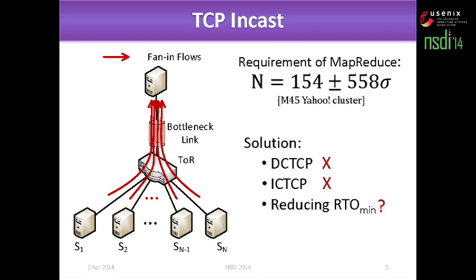Let's look at each problem step by step. The first is TCP in-cast — it's a very famous problem. We think no existing solution can meet all the requirements of MapReduce. For example, the number of senders in MapReduce is quite large, but today's solutions like DC-TCP and SC-TCP cannot handle such a large number. It has also been mentioned in the paper whether reducing the RTO minimum can solve this problem.